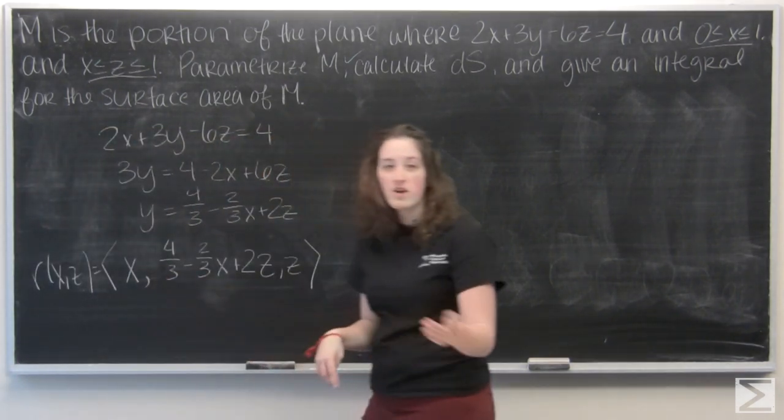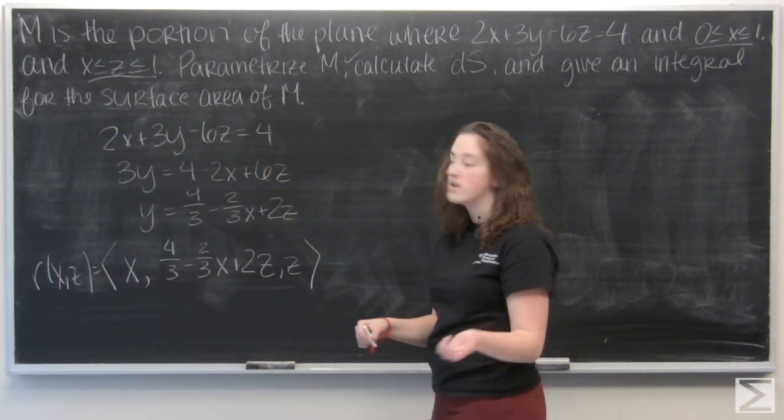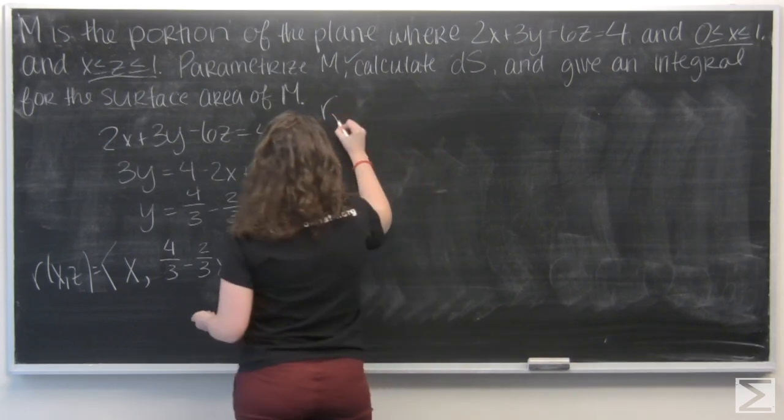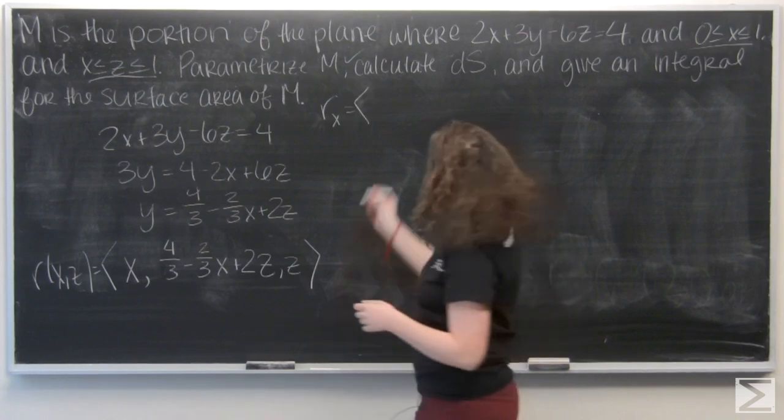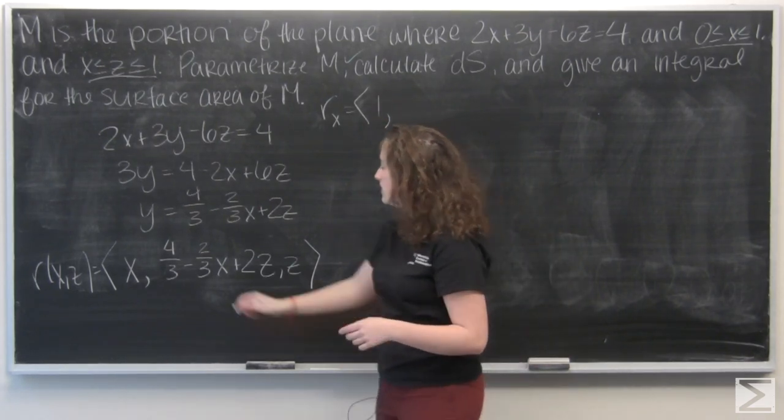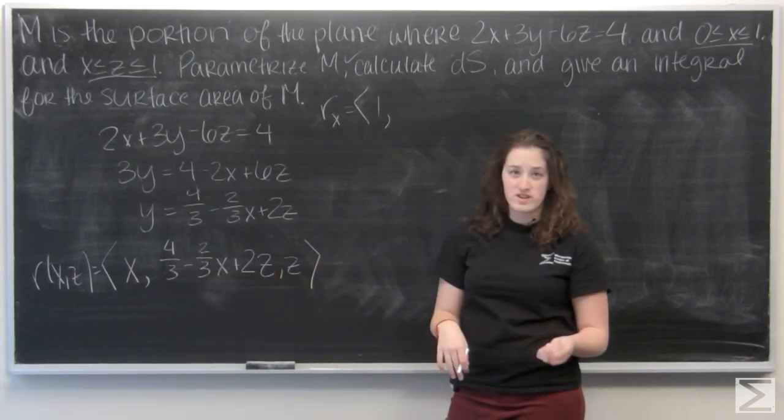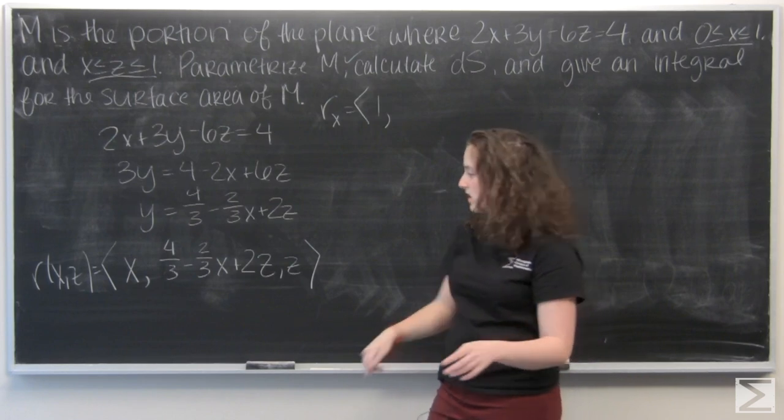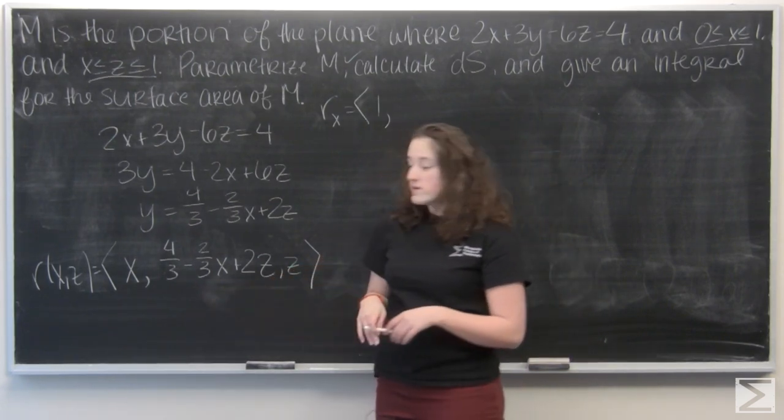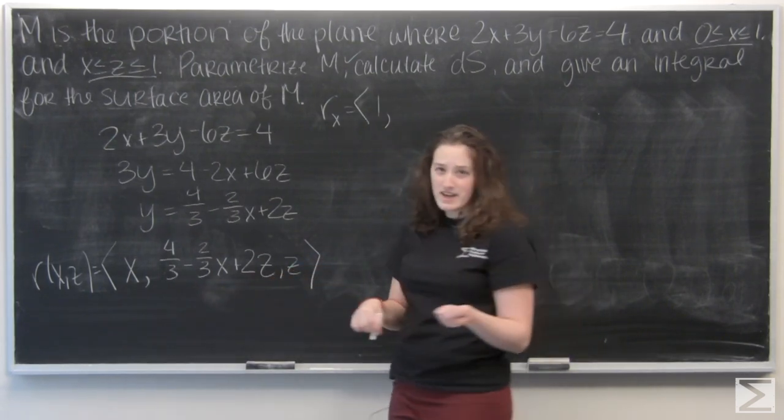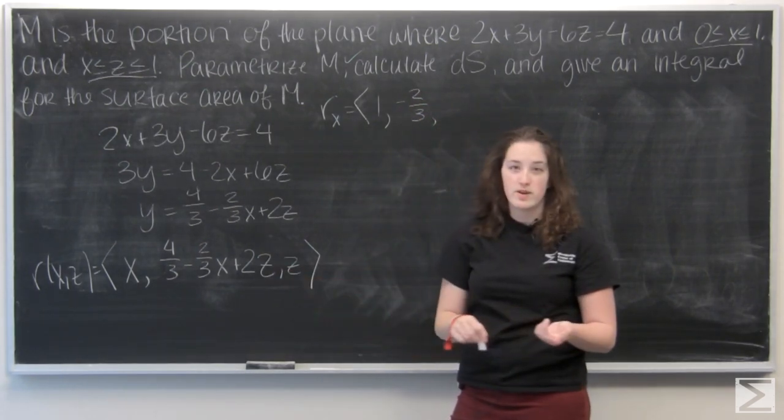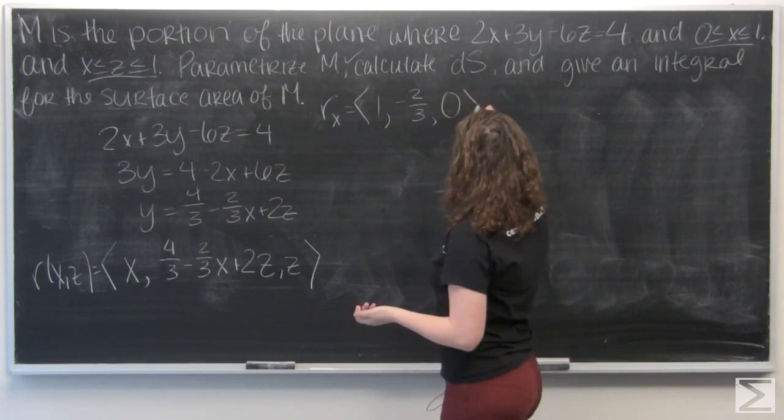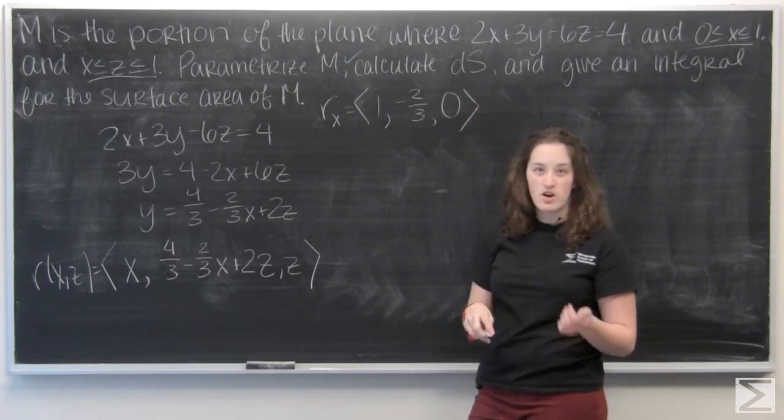So I'm going to call this r of x and z. Now let's find r sub x. Well, the derivative of x is going to be 1. 4 thirds and 2z are going to be treated like a constant, so they're both going to be 0. And the derivative of negative 2 thirds x is negative 2 thirds. And z is going to become 0.